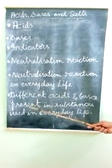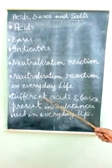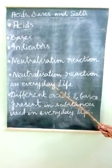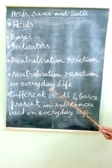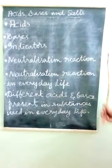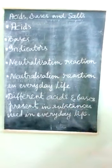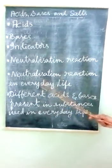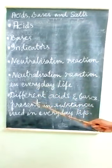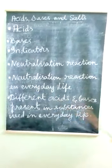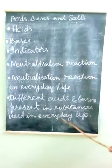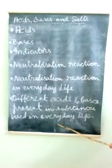Factory wastes usually contain more acids, so they are neutralized by adding bases before being released into ponds and water bodies. These are all the applications of neutralization reaction in everyday life, and I also gave the list of acids and bases present in common substances.